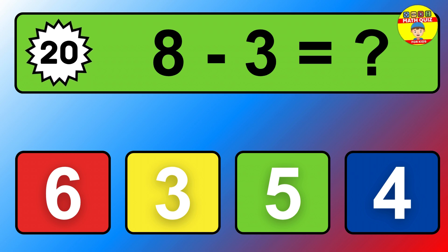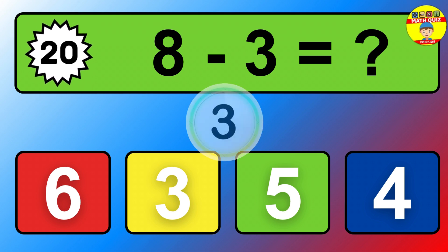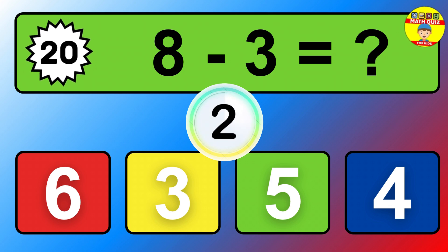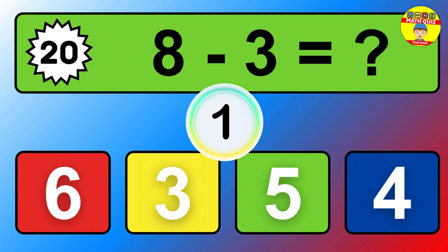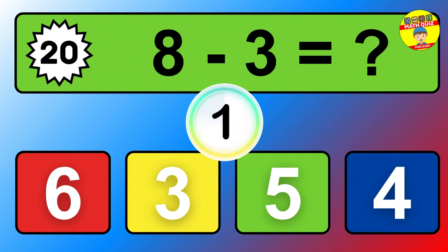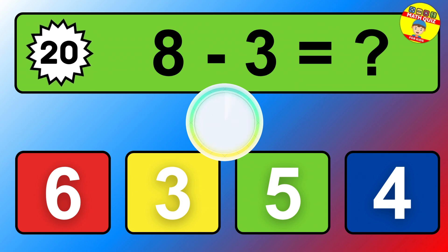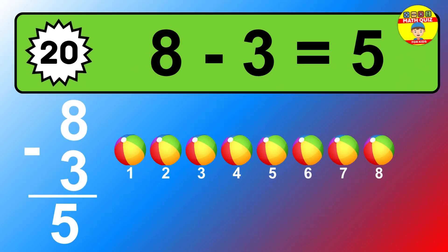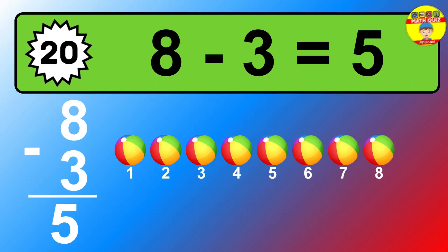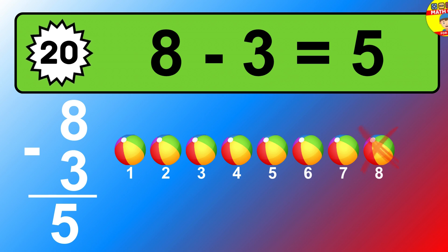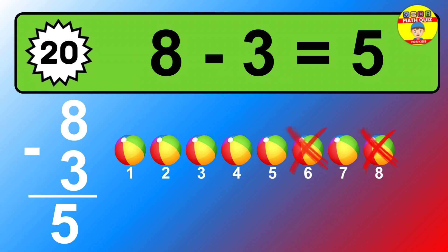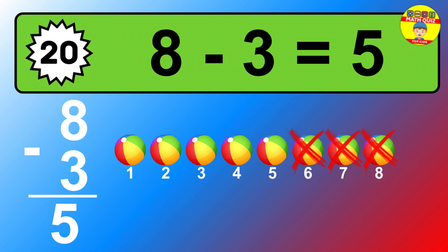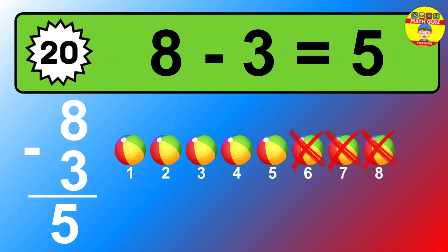Question twenty: eight minus three equals what? So the answer is eight minus three is five. Let's count it. One, two, three, four, five.